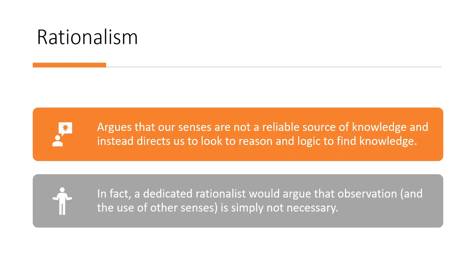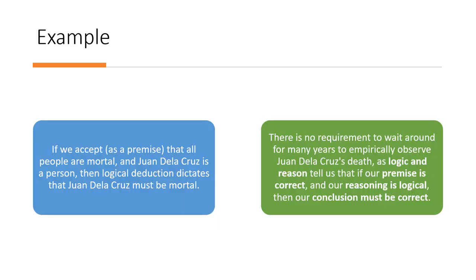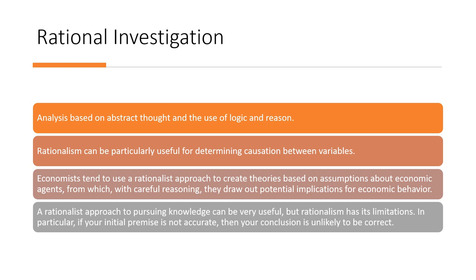Rationalism, on the other hand, argues that our senses are not a reliable source of knowledge and instead directs us to look to reason and logic. A dedicated rationalist would argue that observation and the use of other senses is simply not necessary. For example, if we accept as a premise that all people are mortal and Juan de la Cruz is a person, then logical deduction dictates that Juan de la Cruz must be mortal. There is no requirement to empirically observe his death, as logic tells us that if our premise is correct and our reasoning is logical, then our conclusion must be correct.